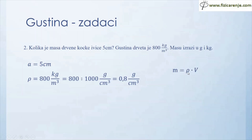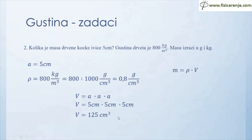Masu ću dobiti kada gustinu pomnožim sa zapreminom. Nemam zapreminu i nju treba da izračunam. Zapremina kocke je A puta A puta A. Umjesto A upisujem 5 centimetara: 5 puta 5 puta 5 je 125, a centimetar puta centimetar puta centimetar je centimetar na treći, dakle 125 cm³. Umjesto gustine pišem 0,8 g/cm³, a umjesto zapremine 125 cm³. 0,8 puta 125 je 100, centimetar kubni se skrati i ostaje samo gram.